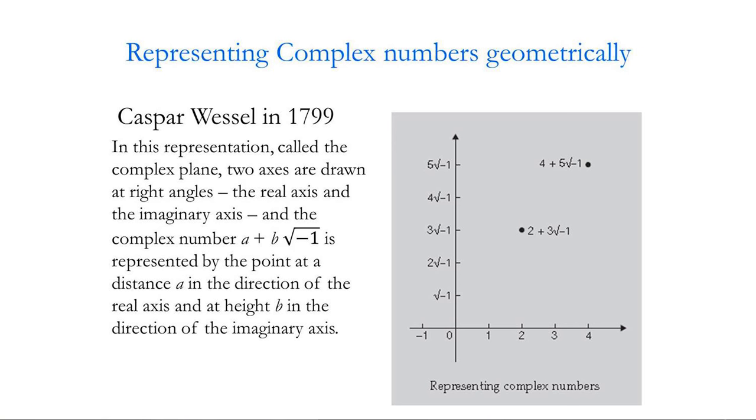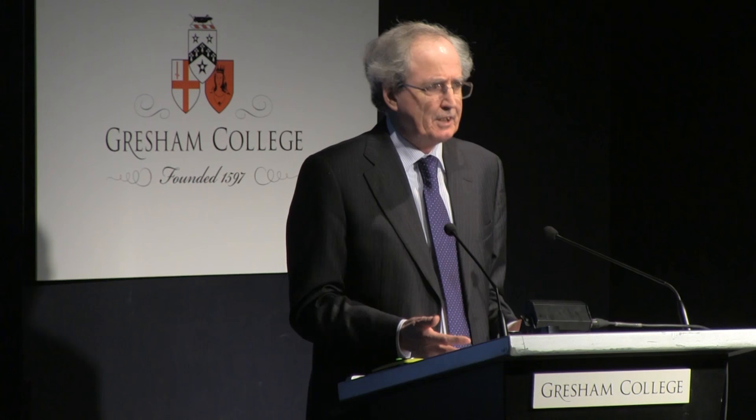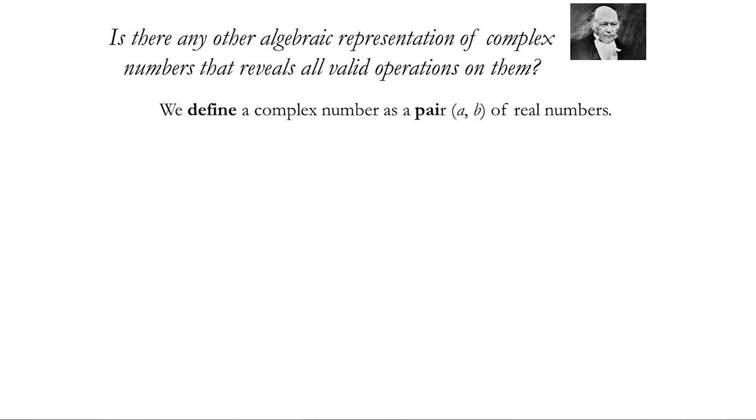But what did Hamilton do? In hindsight, it seems very obvious and is now generally accepted. Hamilton asked the question: is there any algebraic representation of complex numbers? Wessel had a geometrical representation, the Argand diagram as it's usually called now. Hamilton is asking, is there any other algebraic representation of complex numbers that will reveal all valid operations on them? The answer, with hindsight, is very obvious. He defined a complex number as a pair of real numbers. If you're happy enough with real numbers, then you're probably happy enough with a couple of them, and complex numbers are just a couple. Any one complex number is a couple of real numbers.